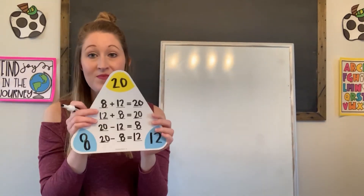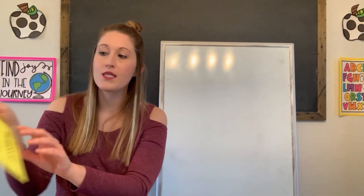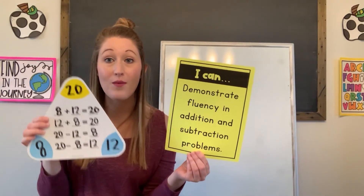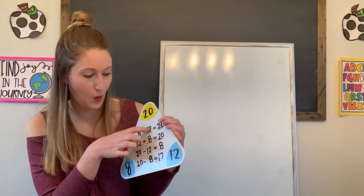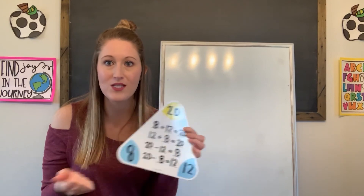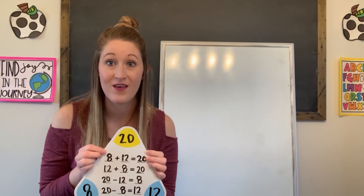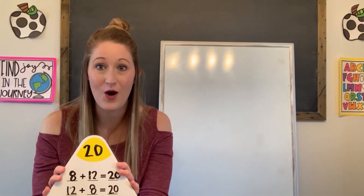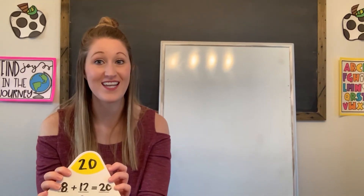That's a fact family! Our addition and subtraction facts are related. If I look back at my goal for today — I can demonstrate fluency in addition and subtraction problems — knowing all about my fact families is really gonna help me be fluent. Because if I know what eight plus 12 is, I can figure out what 20 minus 12 is, because they're all related. I hope that you learned a lot in our math lesson today, and I hope that you practice some of this at home while having fun and working hard.